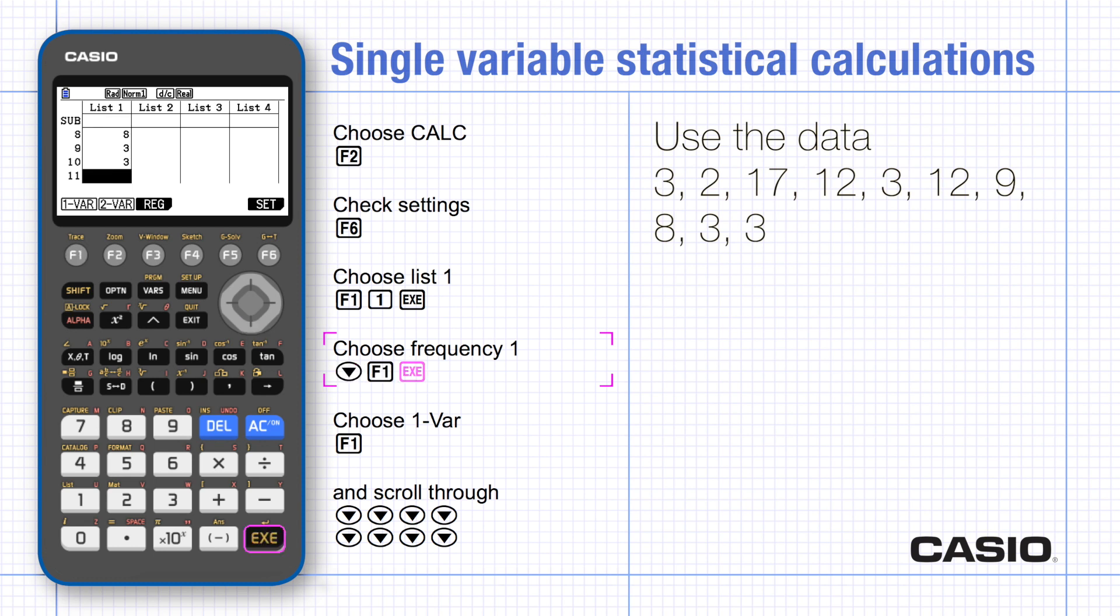Execute. Choose calc again and you'll see a list of statistics including the mean, standard deviations, quartiles, mode, and some totals.